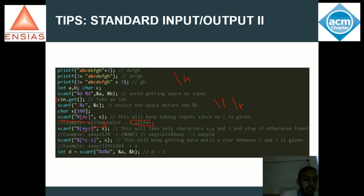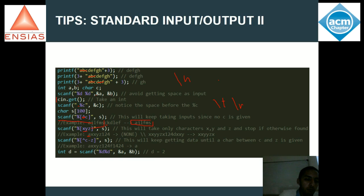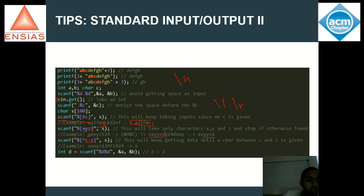Voilà le cas. J'ai dit X, Y, Z. Quand tu dis X, Y, Z, si j'entre A, X, X, Y, Z, il va prendre non. Pourquoi ? Car dès le début la condition n'est pas vérifiée : c'est un A, ce n'est pas un X, Y, Z. Mais si je dis X, X, Y, Y, Z, X, 1, 2, 4, il va prendre tout cela jusqu'à ce qu'il trouve le 1, puis il va s'y arrêter. Parfois on veut du C jusqu'à Z. Tout simplement, tu vas faire ceci avec le complémentaire, donc il va faire le contraire. Au lieu de prendre C jusqu'à Z, il va prendre le tout sauf C, D, E jusqu'à Z.